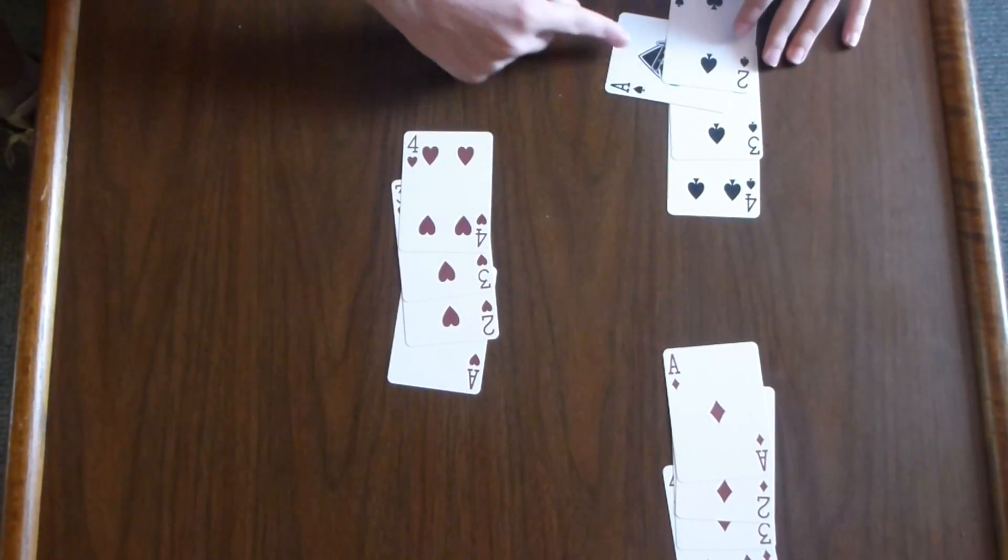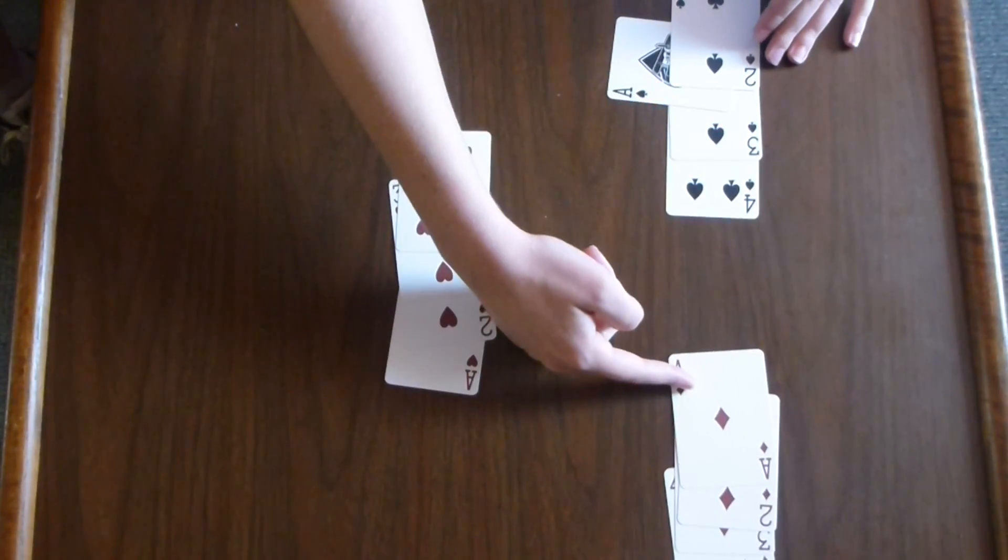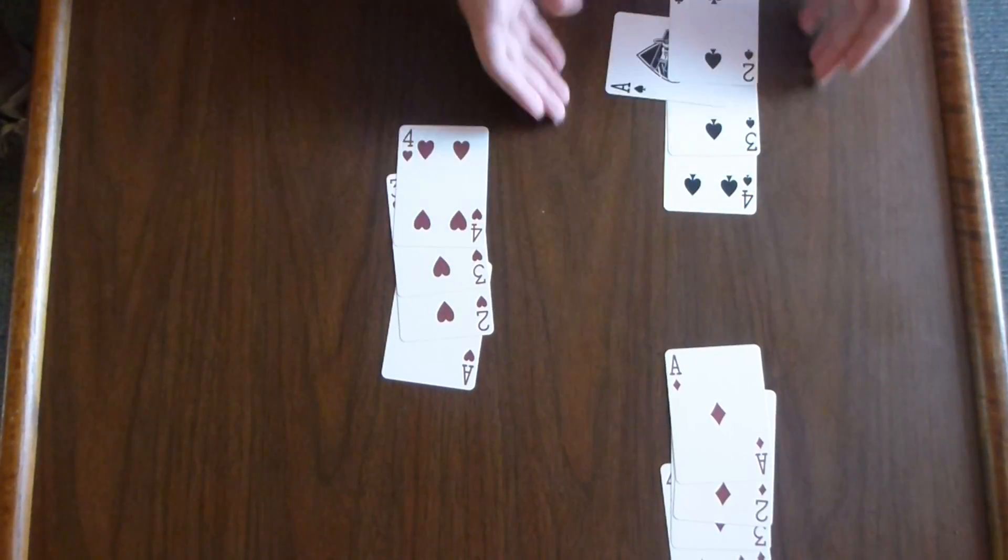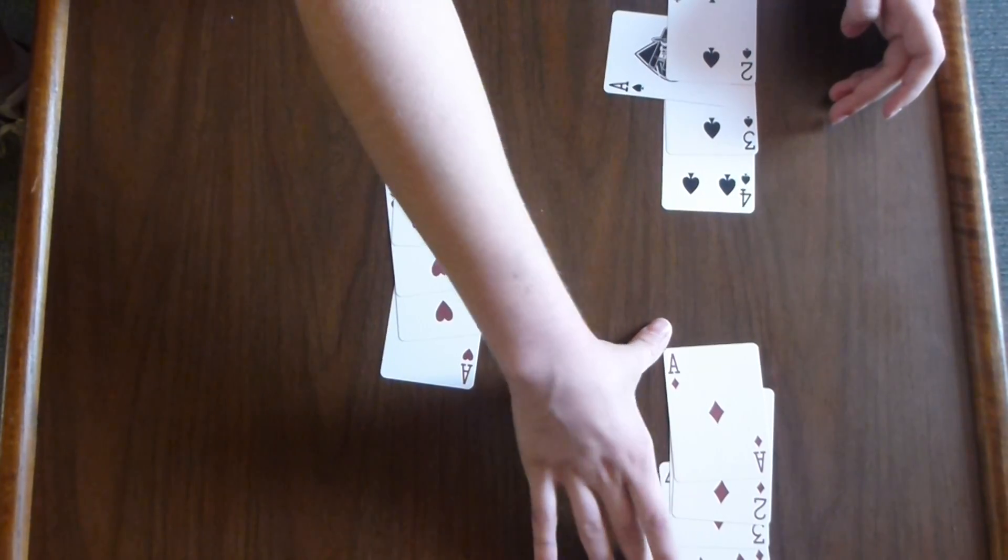However, as you can see, this card and this card are both the same value. They are both aces. So, we keep ace-two-three-four in this pile and ace-two-three-four in this pile.